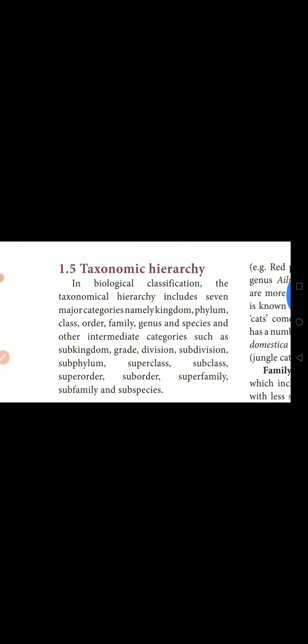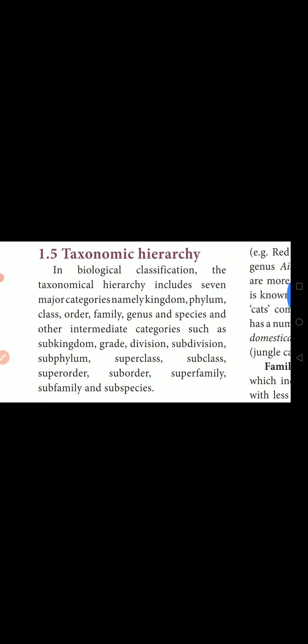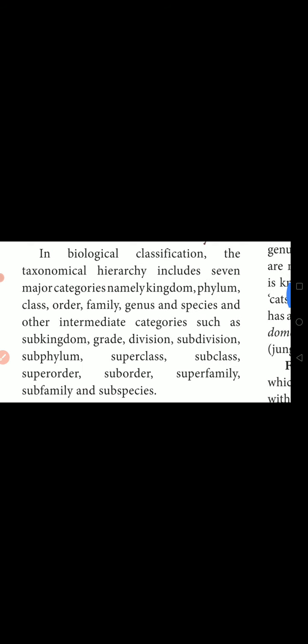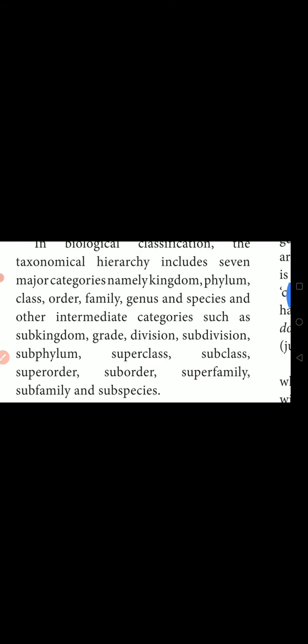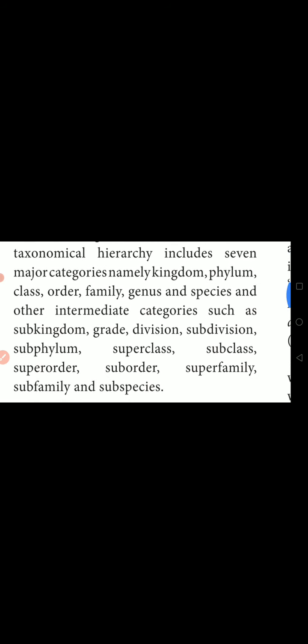The next topic is Taxonomic Hierarchy. In biological classification, the taxonomical hierarchy includes seven major categories. Biological classification means the naming of animals in a systematic manner. Taxonomical hierarchy means the steps or methods of naming those animals. The seven major categories are: Kingdom, Phylum, Class, Order, Family, Genus, and Species, along with other intermediate categories.